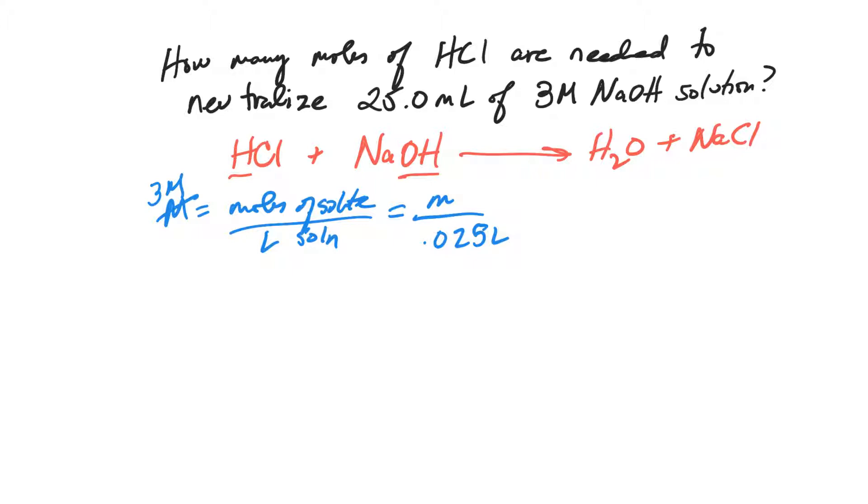Molarity is moles over liters. So if I get rid of the 0.025 by multiplying, I cancel liters and I end up with moles. I have 3 times 0.025, so I have 0.075 moles. This is how many moles of sodium hydroxide I have.